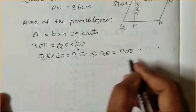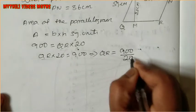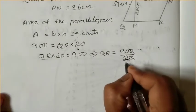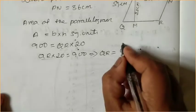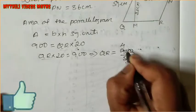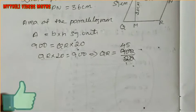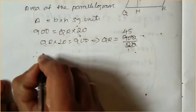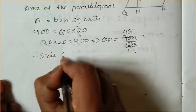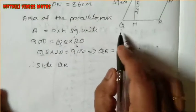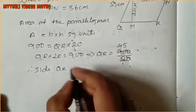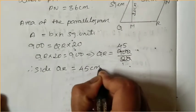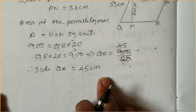900 equals QR into 20. Dividing both sides: QR equals 900 divided by 20. Cancelling the zero, then dividing: 90 divided by 2 gives 45. Therefore, side QR equals 45 cm.